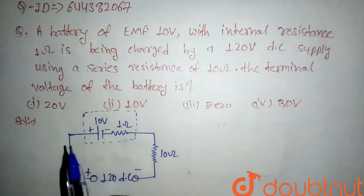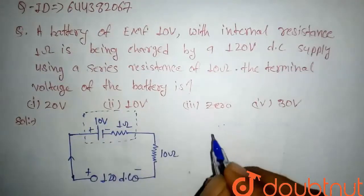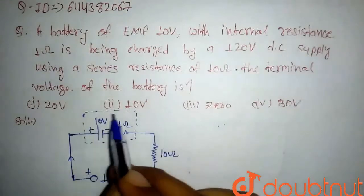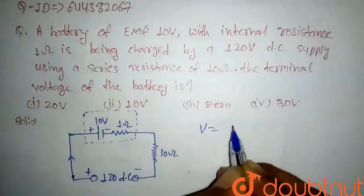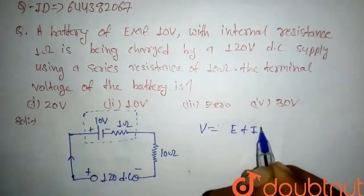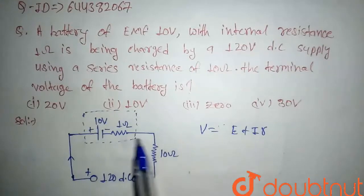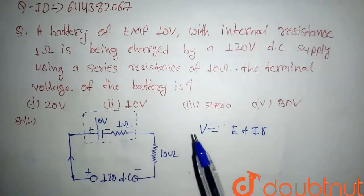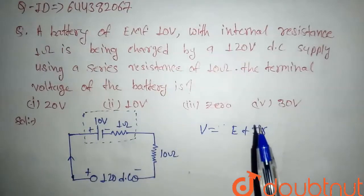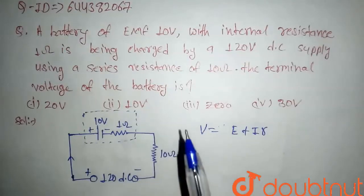We know that when the battery is in charging condition, the terminal voltage of battery is given by V equals E plus IR, where E is EMF and I is current flowing through the battery. So here we have to find I so we can calculate the terminal voltage across the battery.